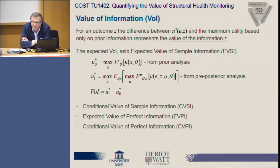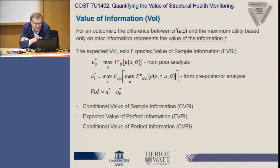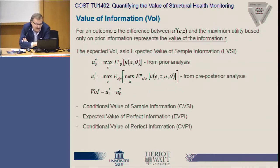A more general definition was already presented by Henning in terms of benefits; here I present the same in terms of utilities. If we denote U0-asterisk as the maximum utility obtained by prior analysis and U1-asterisk as the maximum utility obtained by pre-posterior analysis in extensive form, the difference between these two utilities gives us the value of information. This is also called the expected value of sample information, because at the time we estimate it we know nothing about the experiment, its outcomes, or the state of the structure. There is also a conditional value of sample information, applicable when the experiment has already been carried out and its outcome is known.